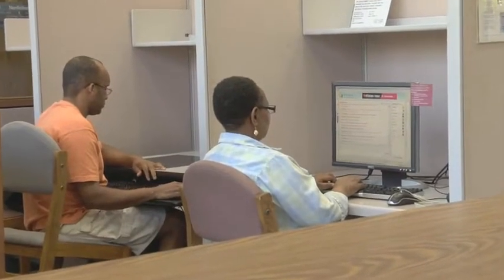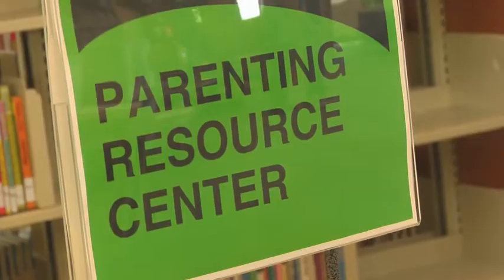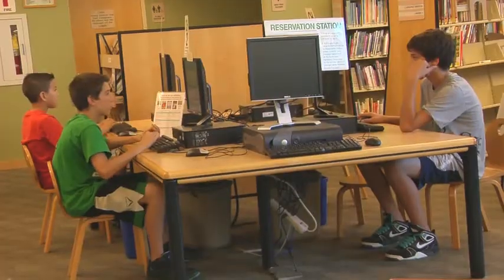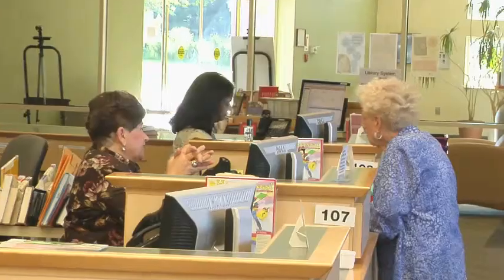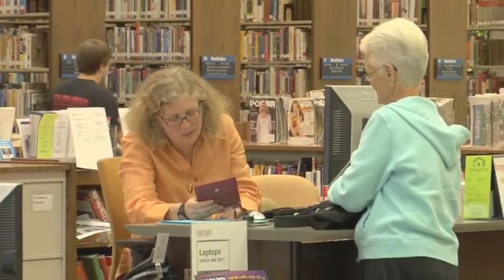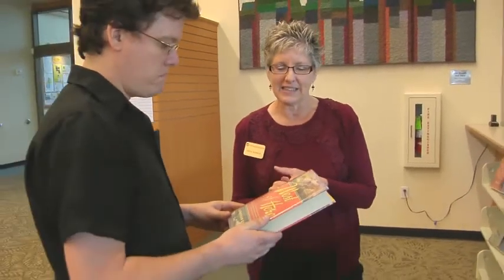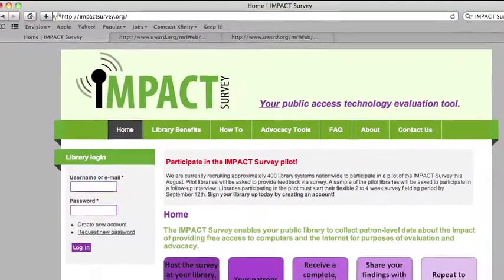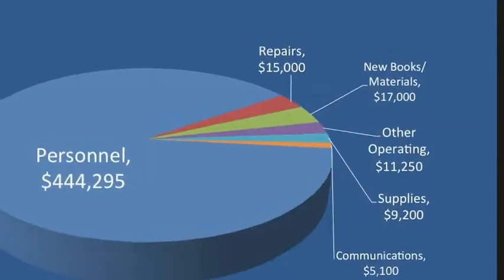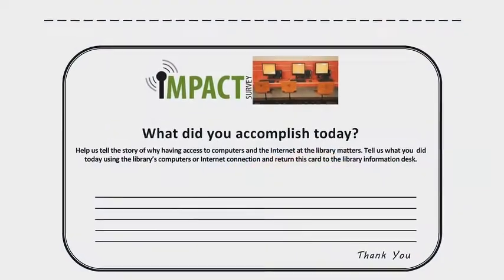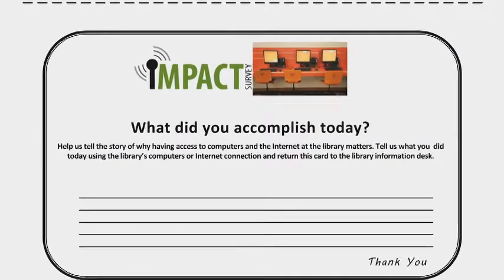One of the most critical services provided by libraries is public access to the essential tools used for getting a job, interacting with government and businesses, learning, and connecting socially. With data, libraries must connect public access to meaningful public outcomes, like employment, emphasizing both how and what the library accomplished, as well as why funding levels matter. In exploring the use of data from the U.S. Impact Survey and other sources, we'll examine the overall fundamentals of public sector budgeting in order to understand the context within which data, as well as the stories from your patrons, can increase the effectiveness of your budget presentation.